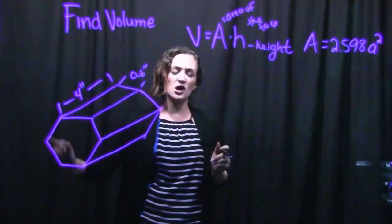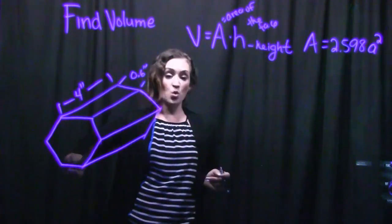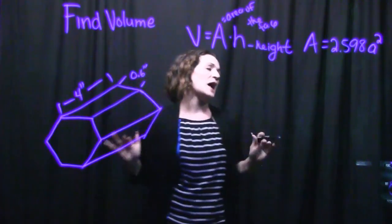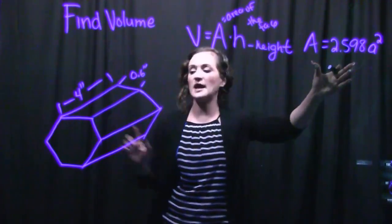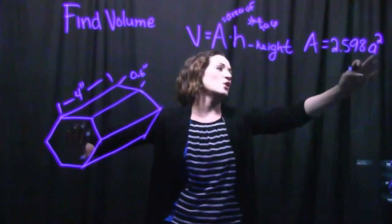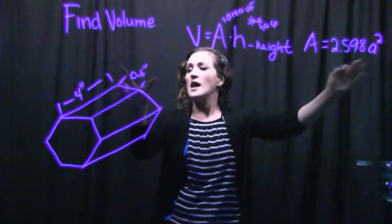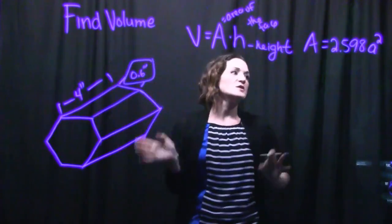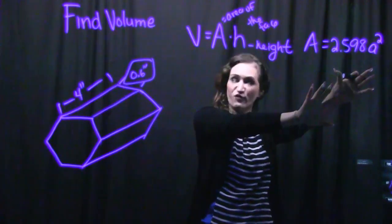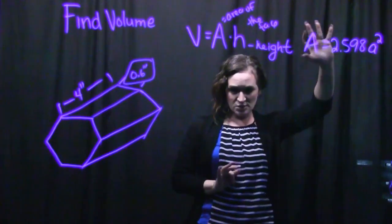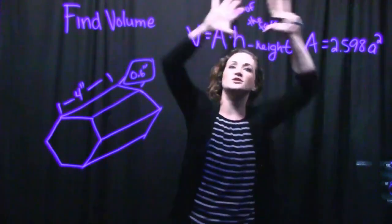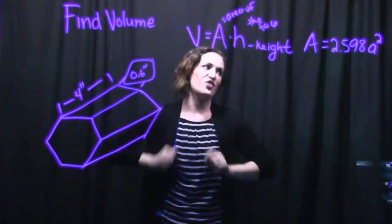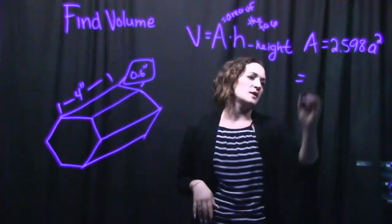What we know about a hexagon is that all sides are equal, so as long as we know one side, we know all of them. Let's check that we have all the appropriate information. To find the area of the hexagon, the only thing we need to plug in is the side length, and we are given that the side is 0.6 inches. So all we need to do is plug 0.6 inches into this formula.